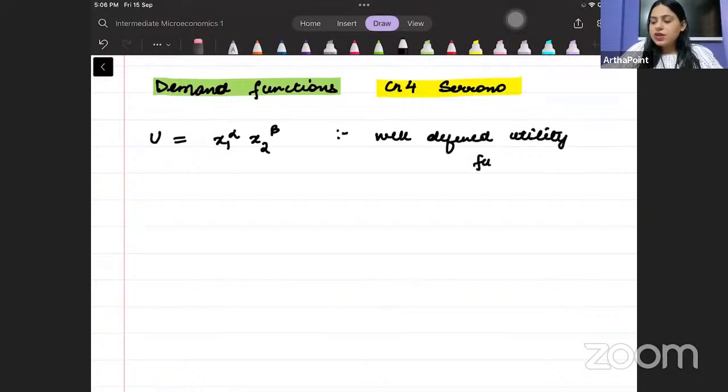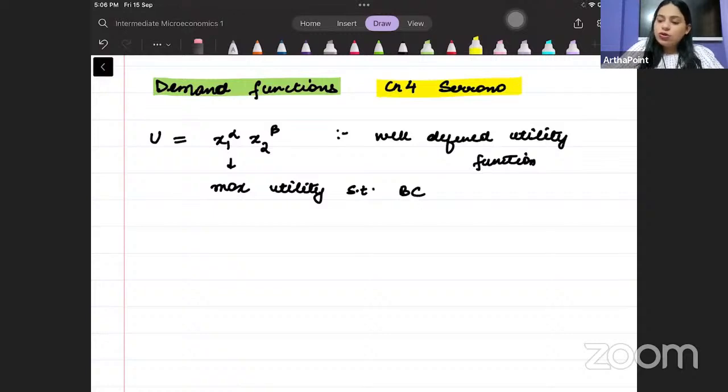But what was my aim? What did I intend to do? So the intention was to go ahead and to maximize utility subject to my budget constraint. So I wanted to go ahead and maximize this utility function subject to my budget constraint, right? And what is my budget constraint? P1 x1 plus P2 x2 is equal to M.